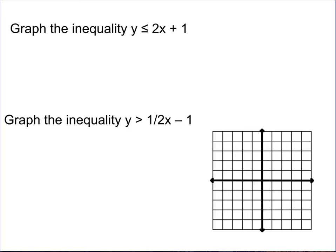We'll start with some examples. We are working with linear inequalities, which we have graphed before — we spent a lot of time on this in Chapter 5, so this should be fairly familiar. We need to graph two inequalities. We're going to graph the first one in red: y is less than or equal to 2x plus 1. It's already in slope-intercept form. The slope is 2 and the y-intercept is 1.